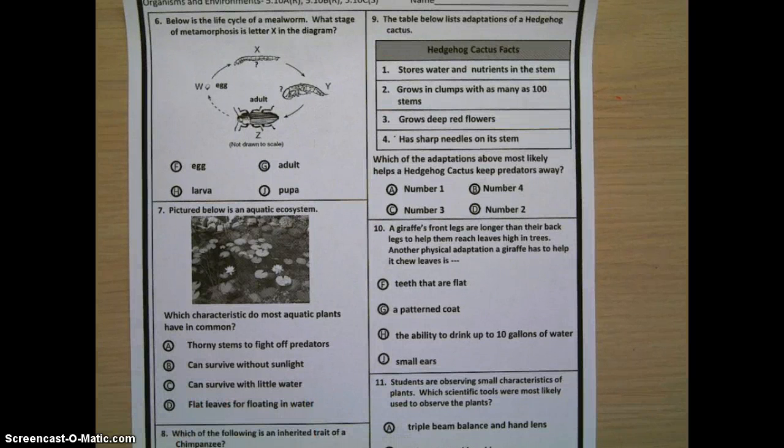Six, below is the life cycle of a mealworm. What stage of metamorphosis is letter X in the diagram?